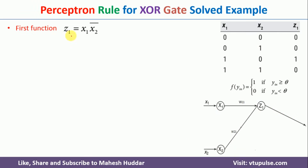We will start with the Z1 equation. Z1 is equal to X1·X̄2. So if X1 is 1 and X2 is 0, negation of 0 becomes 1, so 1 AND 1 equals 1. Only in this case the output is 1; in all other cases it is 0. The activation function outputs 1 if the net input is greater than some threshold value, otherwise 0. So we need to calculate the net input for Z1 and then for Z2 at a later stage.